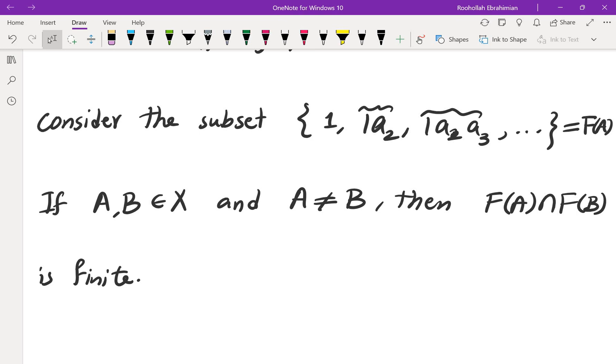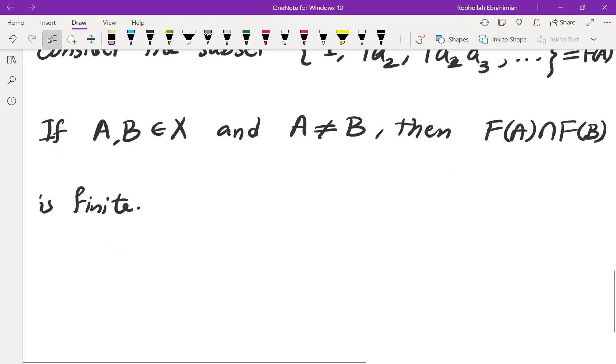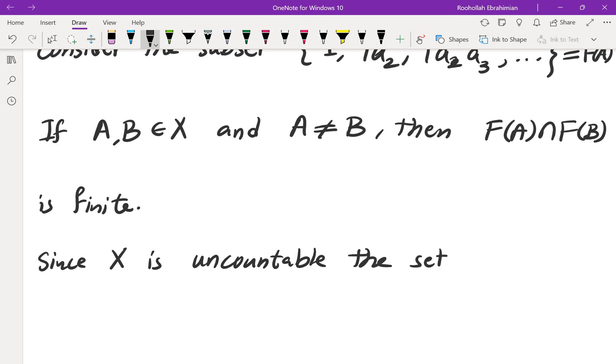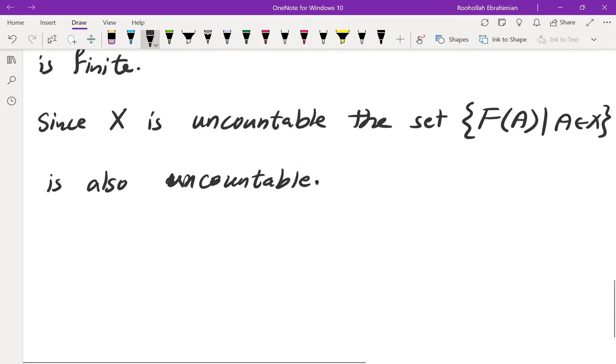But what happens is all of these sets are uncountable. Since X is uncountable, the set F of A, where A is in X, is also uncountable. We found an uncountable subset of Z plus when the intersection of each two of them is finite. And that completes the solution.